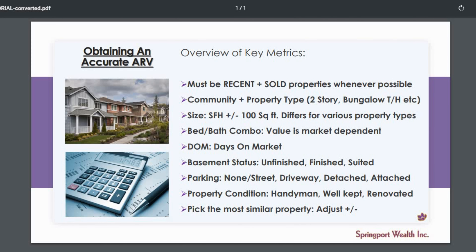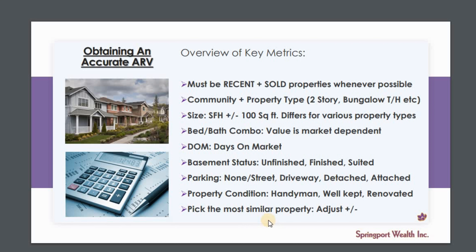So just a quick recap on how to obtain your ARV: it needs to be recent and sold, same community and property type, size is a factor, bed and bath is a factor, days on market is another key metric, basement status is a factor, parking is a factor, and property condition. Once you have your subject property and the most closely similar comparable — it's very rare to find two exactly the same — you plus or minus depending on inferior or superior metrics. I hope this helps you all on your way to accurately obtaining your next after repair value for your next investment property. Thanks so much and happy investing!